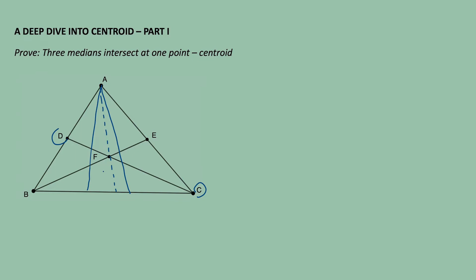Today we are going to work on a proof. On Khan Academy, they used analytical geometry where the coordinates of the points are used to show the proof. But today we are going to use a different way called the area method. There's not a big theory behind the method — we are just going to use a lot of areas in our proof.